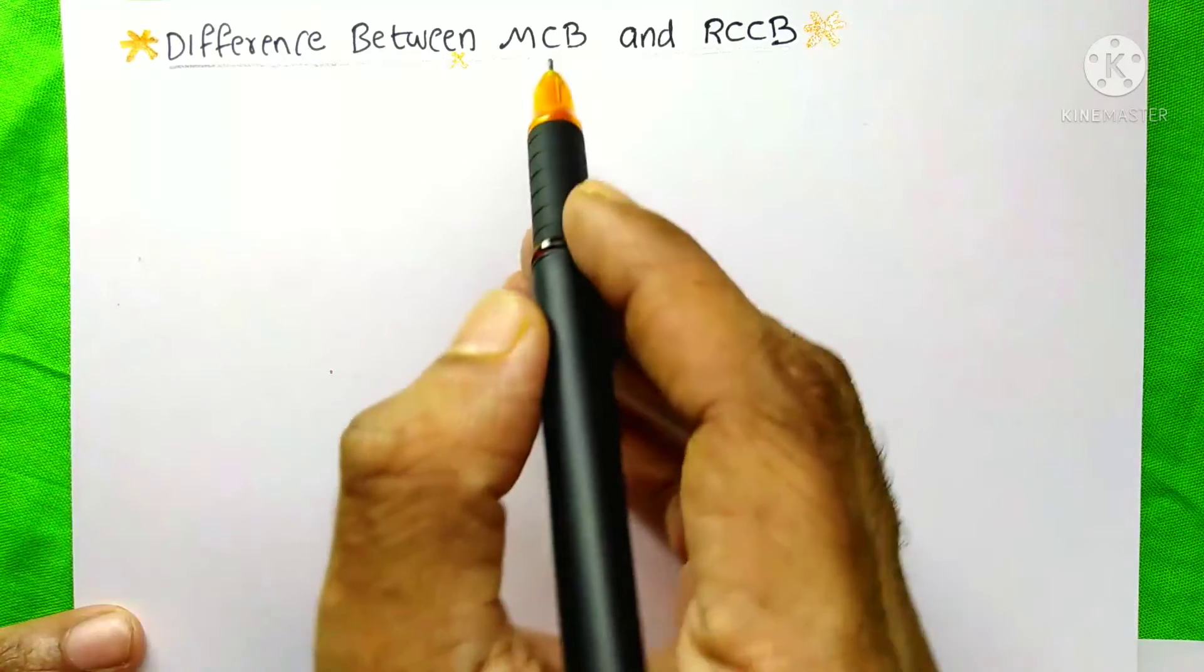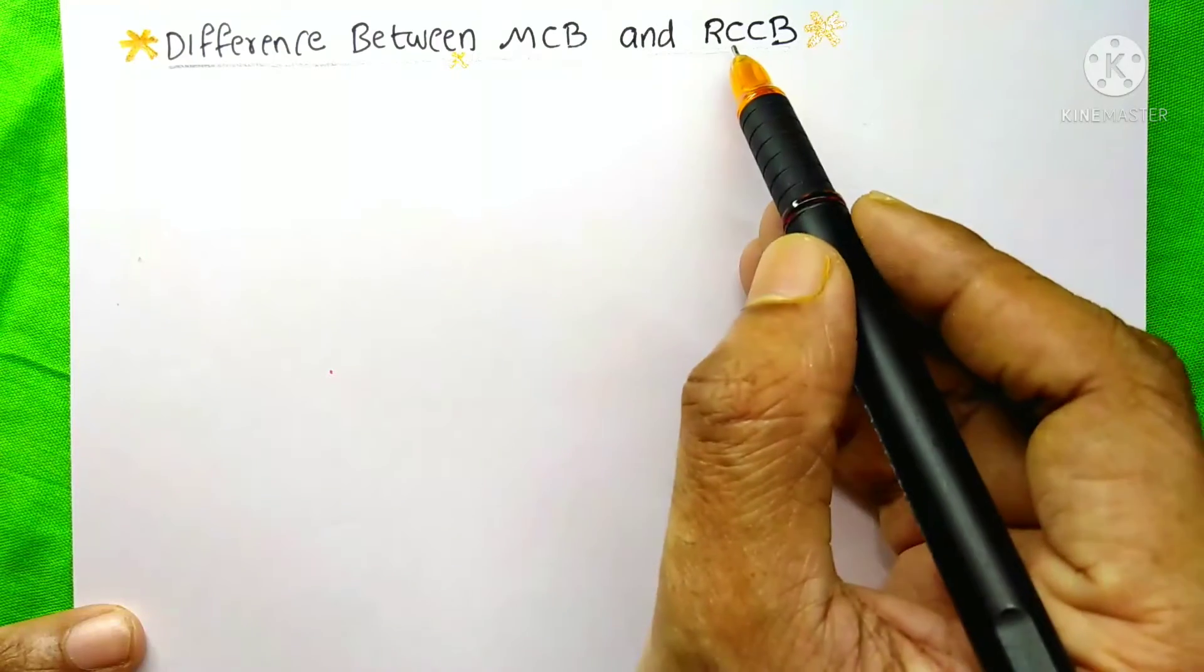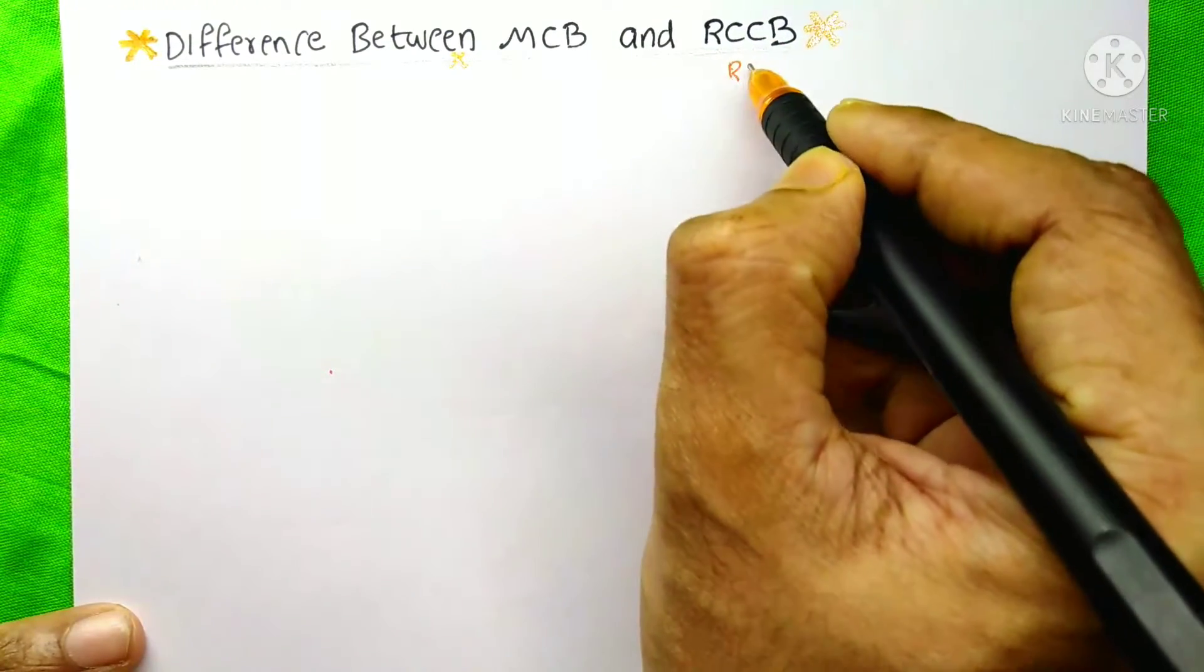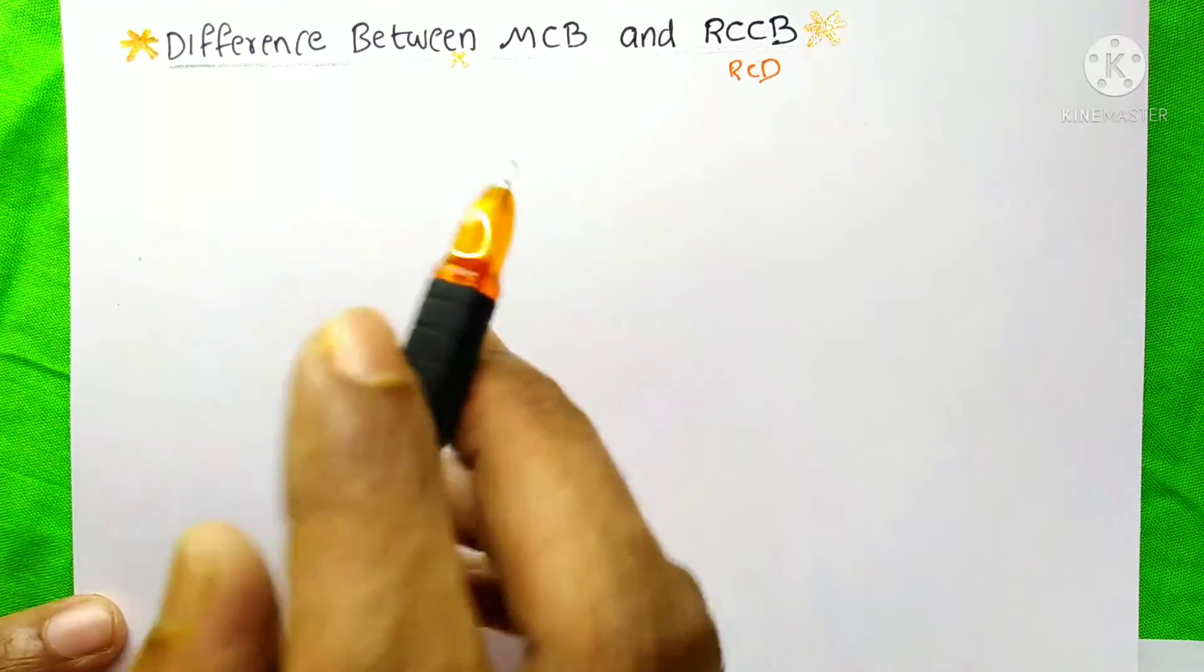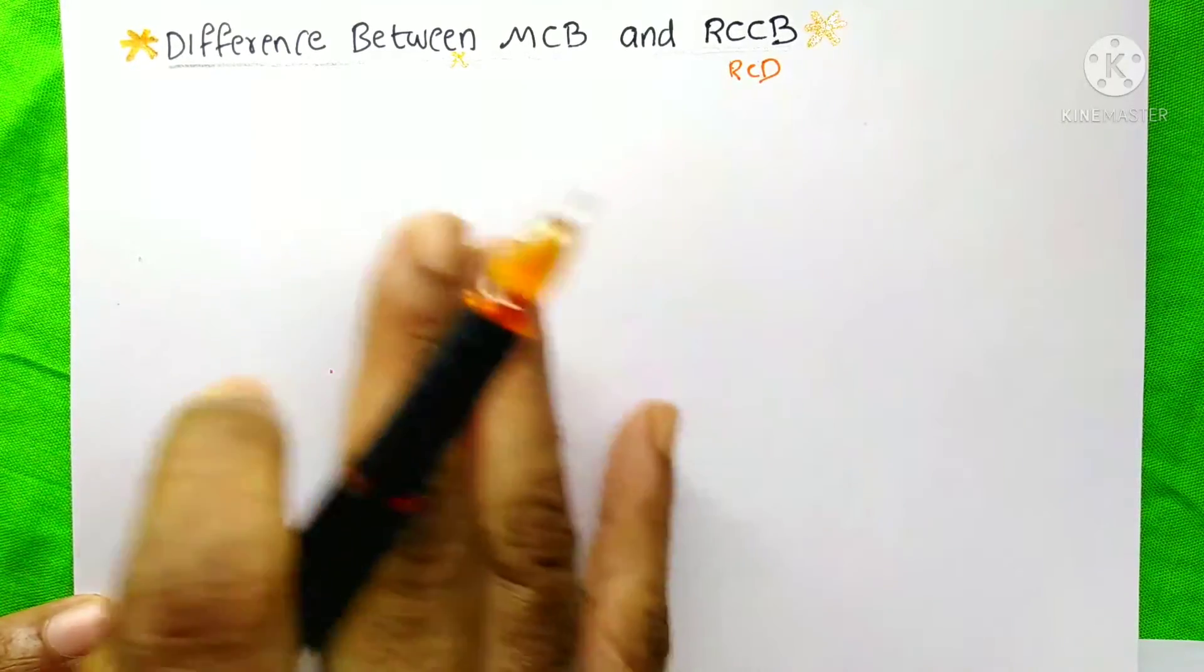Today you are going to learn the difference between MCB and RCCB - miniature circuit breaker and residual current circuit breaker. We can also call it RCD, the residual current device. I am an electrical engineer, please don't skip this video because you are going to get very important knowledge about this.